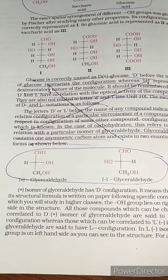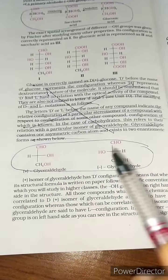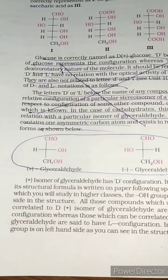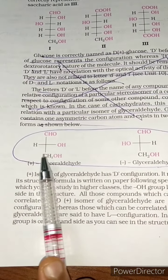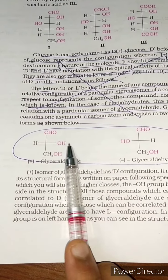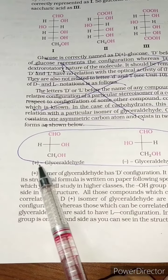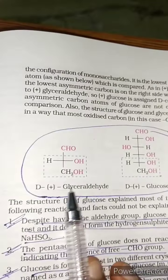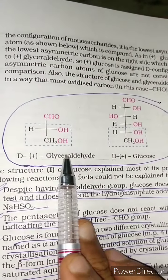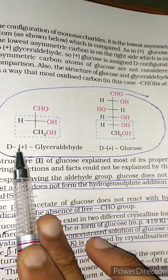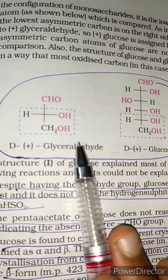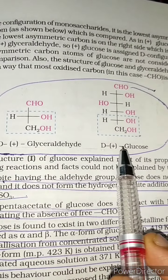Regarding D and L configuration: in D-configuration the OH group is towards the right side, and in L-configuration the OH group is towards the left side. D and L refer to the configuration of the molecule; the D/L designation need not be confused with optical rotation. The structure of D(+)-glyceraldehyde and D(+)-glucose are shown here.